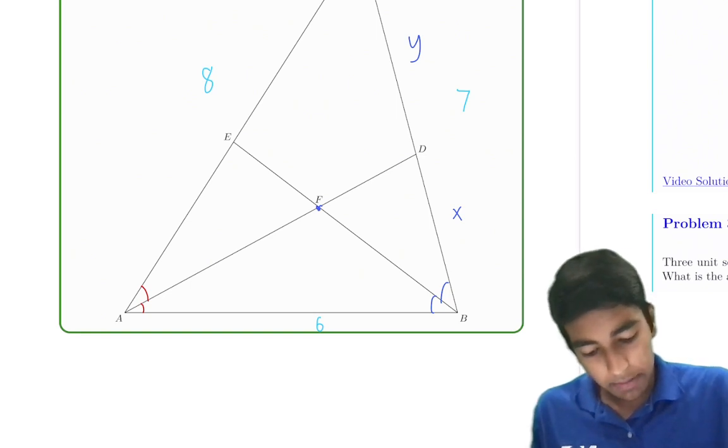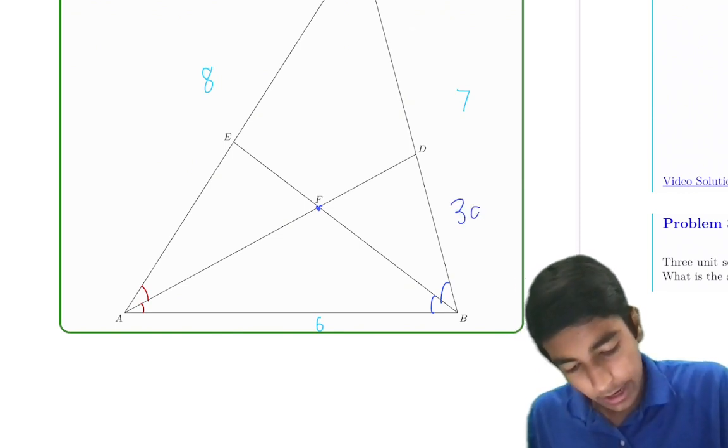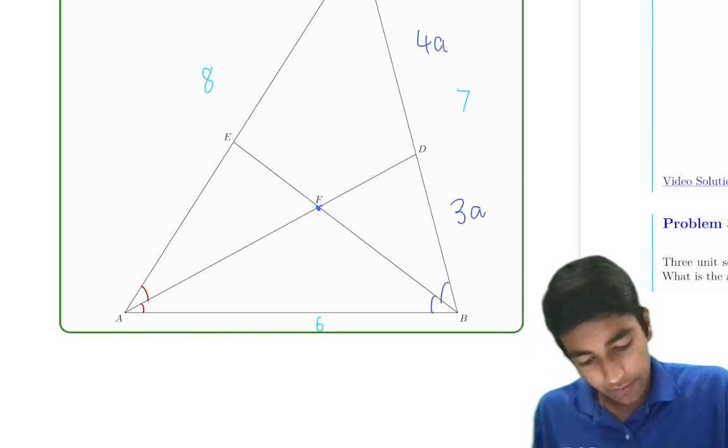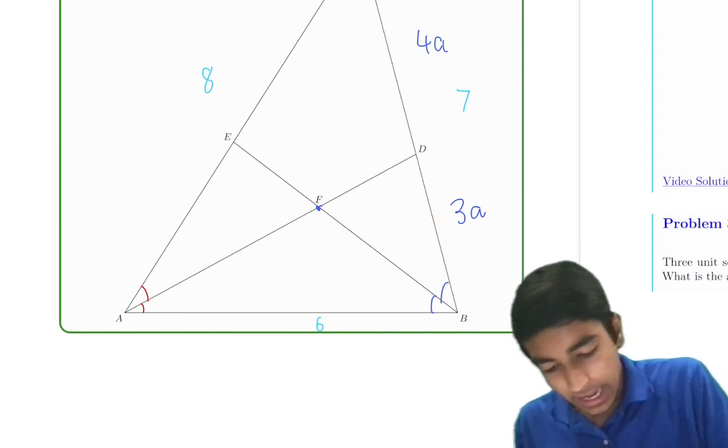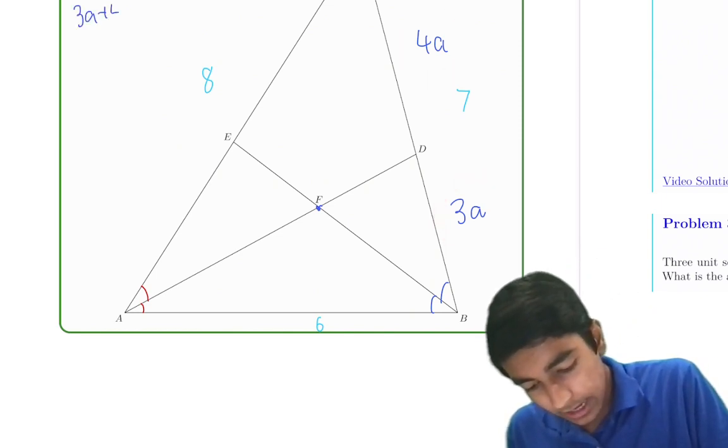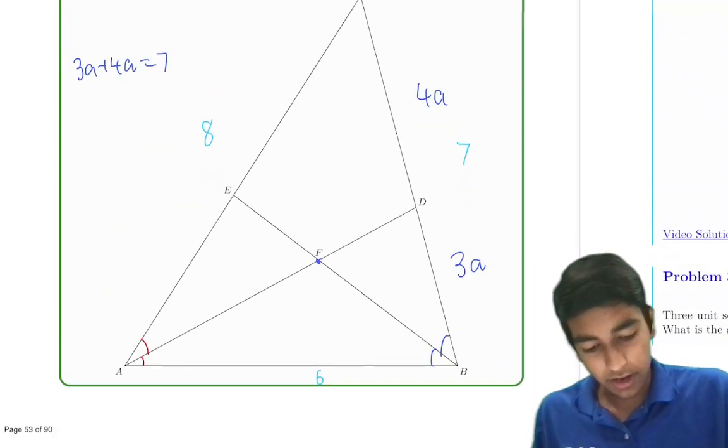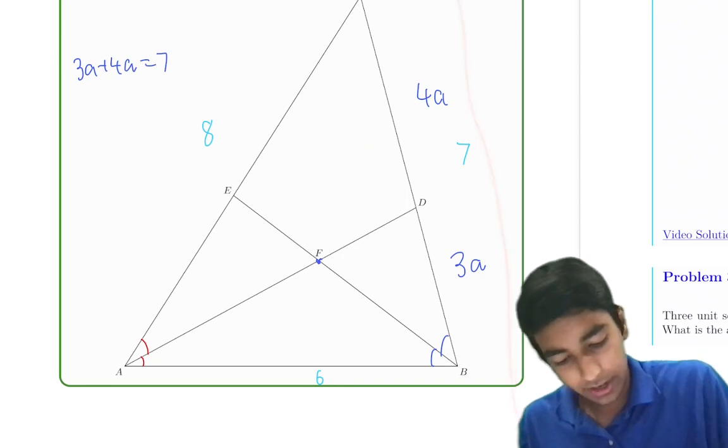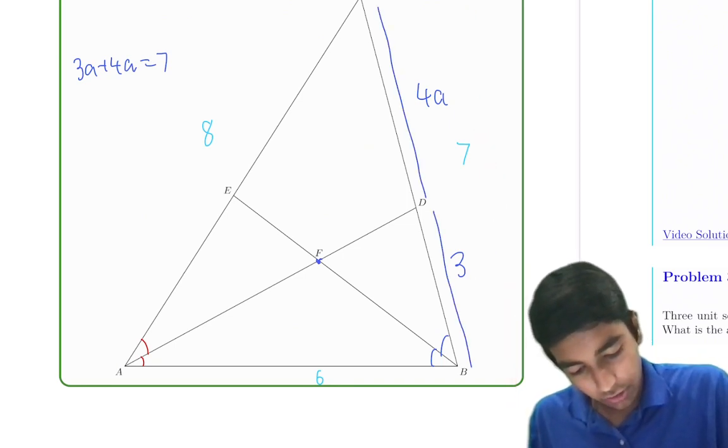Instead of calling it X and Y, let's just call it 3A and 4A, because these two have a ratio of 3 to 4. But we also know that 3A plus 4A is 7, because this is 7. So A equals 1. So this is just 3, BD is 3, and CD is just 4.